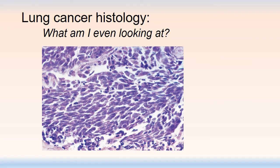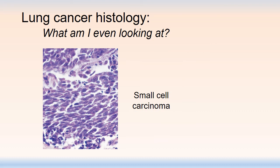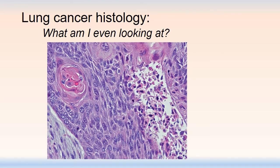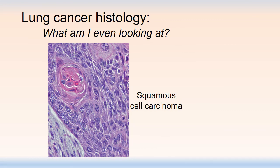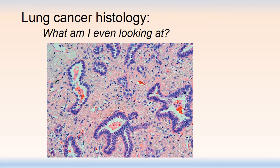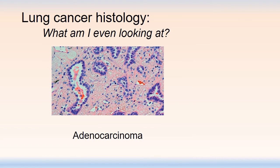Hopefully after going through this you can take something that looks like abstract art and instead say: I notice the nuclear molding and the small cells — that's probably small cell carcinoma. Or you might look at something and say, I see that keratin pearl, I think I even see some intercellular bridges — that's squamous cell carcinoma. And finally: this has glandular profiles in this neoplasm — this is an adenocarcinoma.